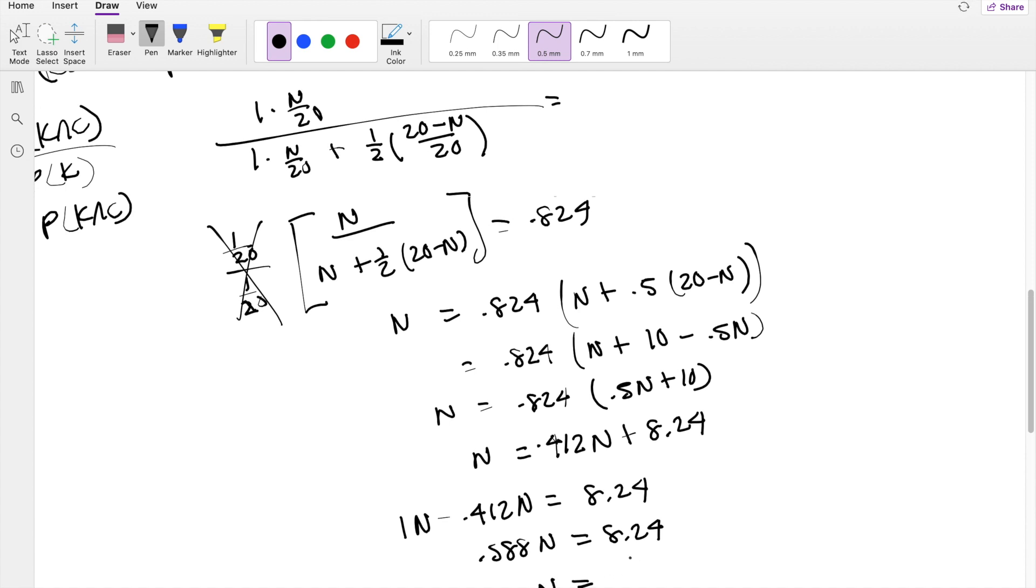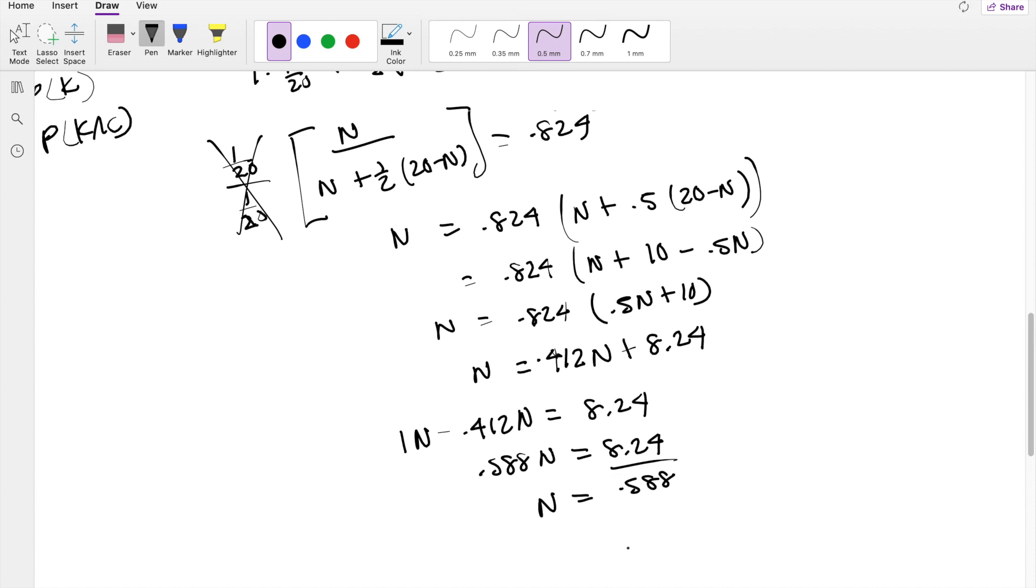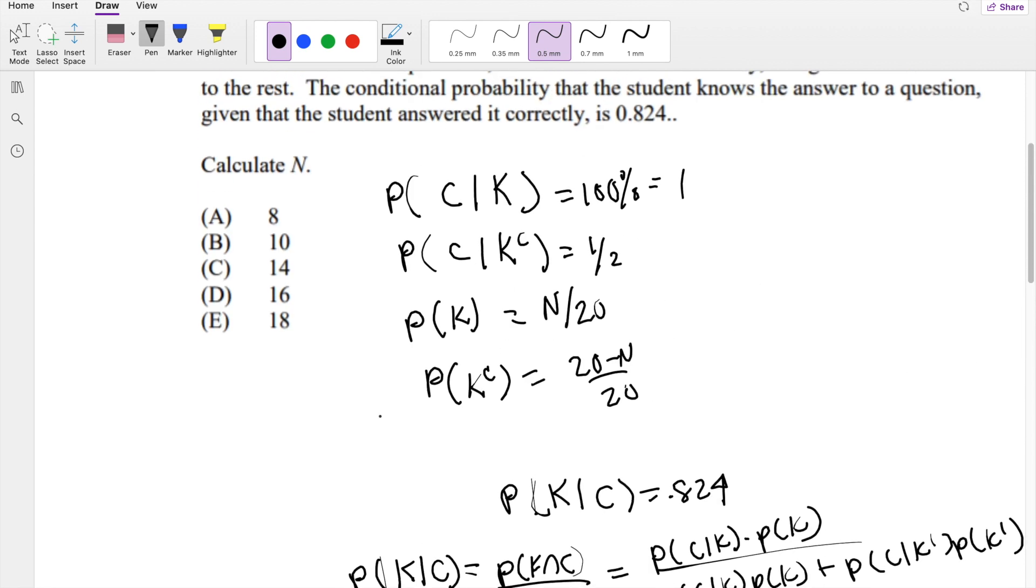So finally, N equals 8.24 divided by 0.588, which is approximately equal to 14.013, which is our answer C.